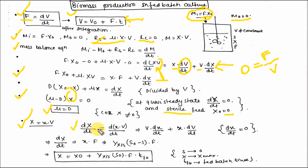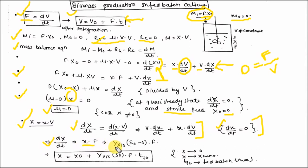So μ = D. If total biomass is X·V (total volume), look at d(XV)/dt: applying the product rule gives V·(dx/dt) + X·(dV/dt). Substituting dx/dt = 0 at quasi steady state gives the result X·F. Here X = Y·(S₀ − S) from the yield equation. Integrating with respect to time and noting that as S tends to 0, X tends to X_max, where t is the fed batch time.